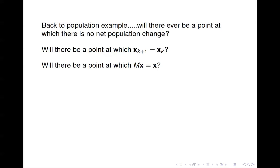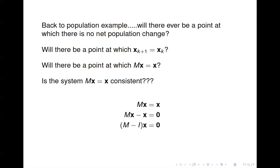We want to know if this system is consistent. We bring x over to the left-hand side: Mx minus x equals the zero vector. The key is to factor out x, leaving (M minus the identity matrix) times x equals zero. We know M and the identity matrix, so we can compute M minus I directly. Written in this form, it's a simple homogeneous system.